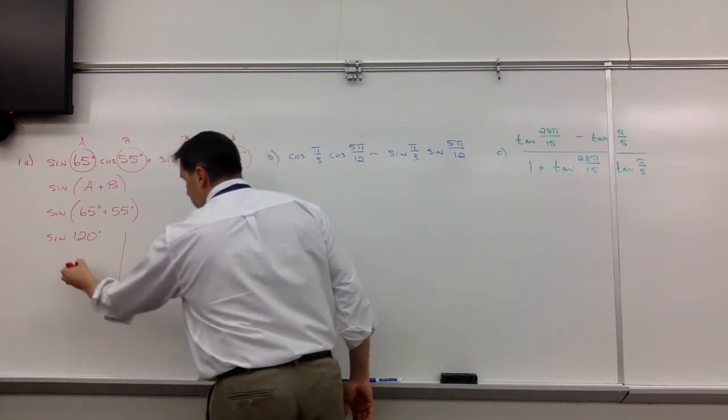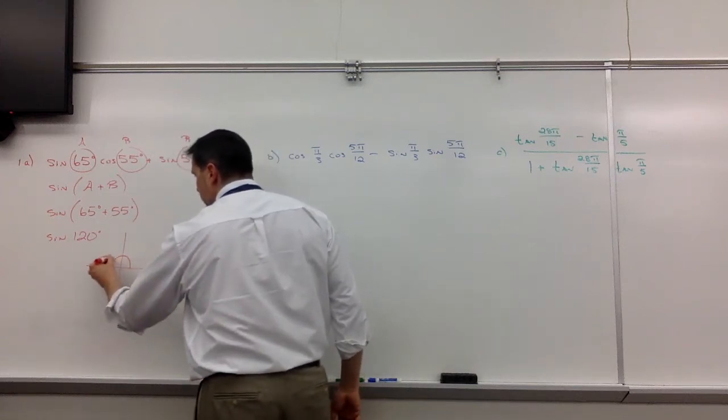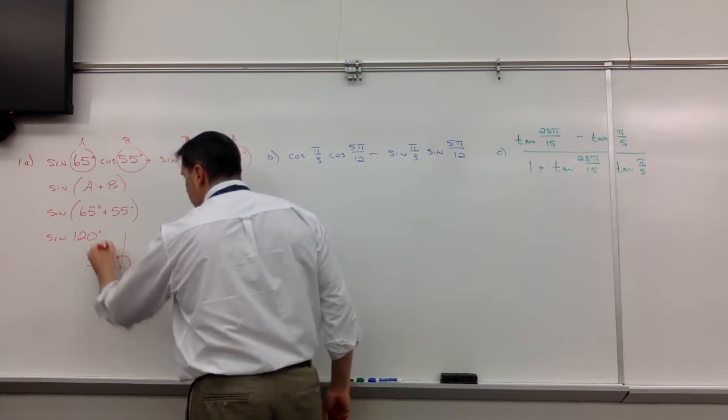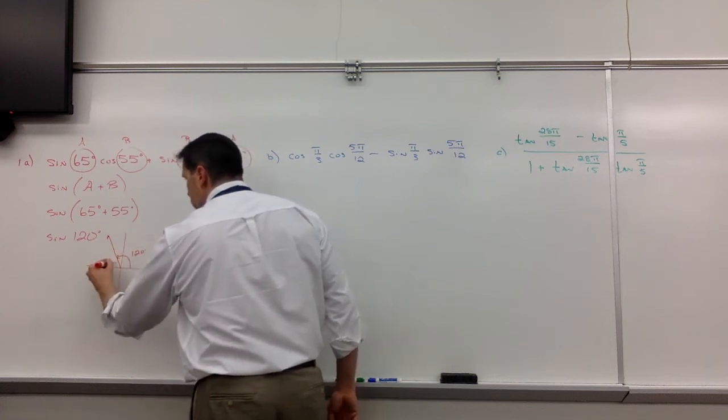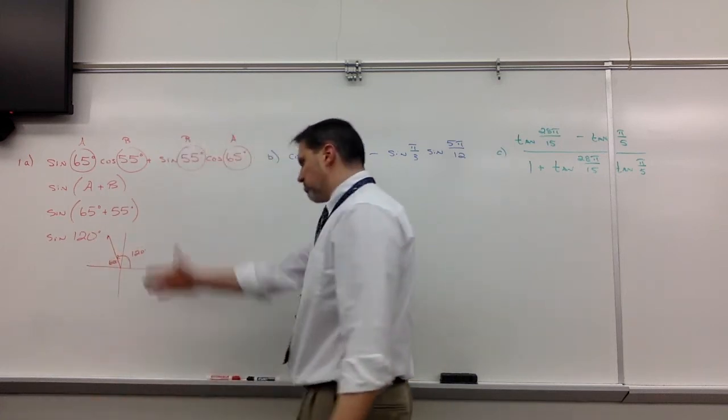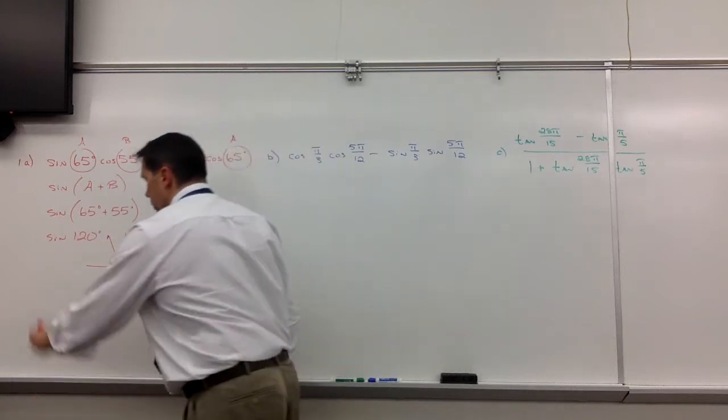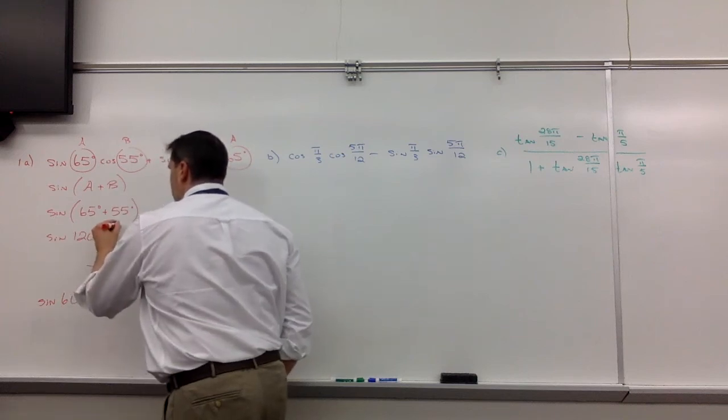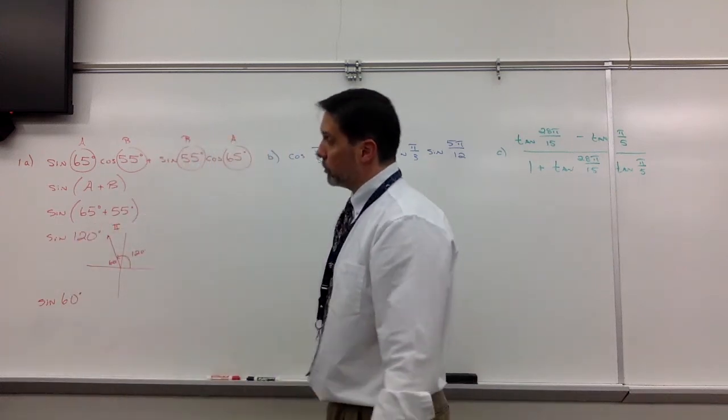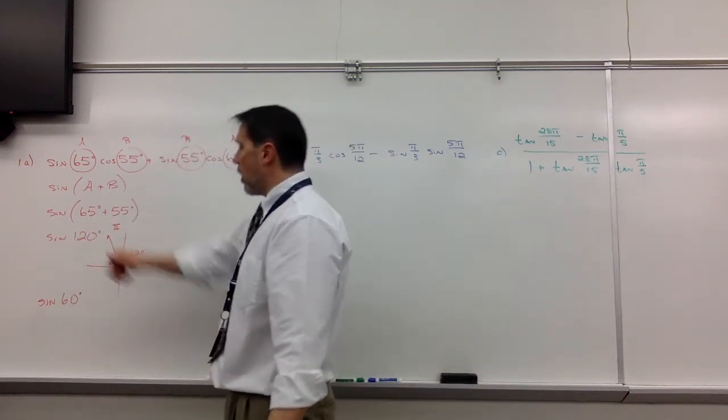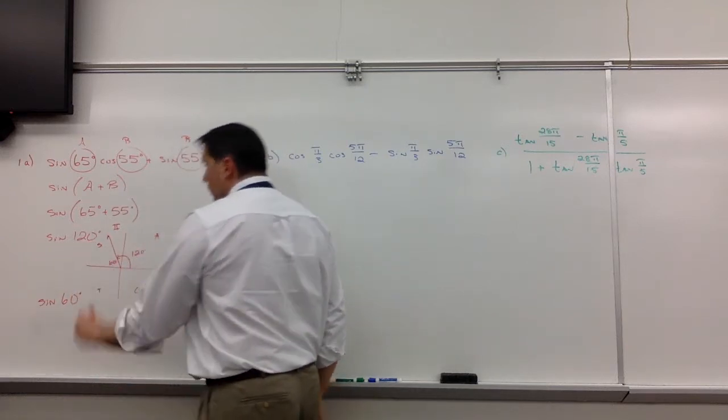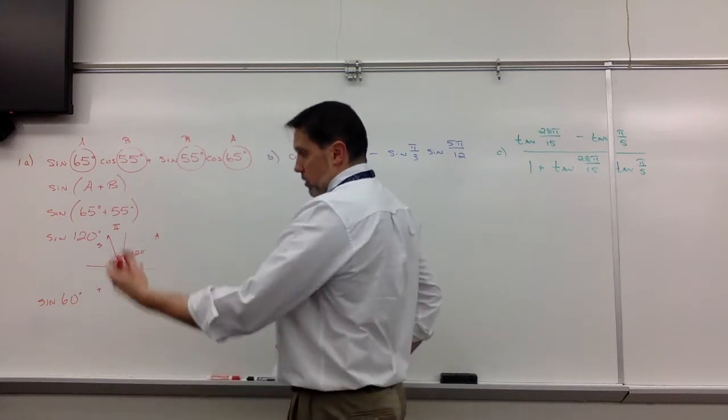Well, one way to find out is to draw a 120 degree angle. 120 degree angle is going to have a reference of 60. So what would probably be wise is if we just said, okay, this is no different than the sine of 60, but you're in quadrant two. So sine in quadrant two is always positive. We're just going by the ASTC.